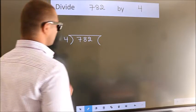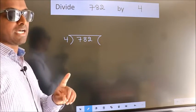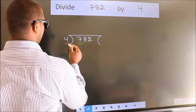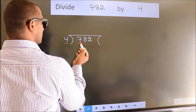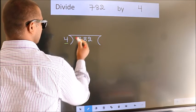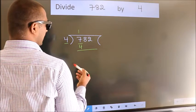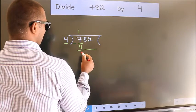This is your step 1. Next, here we have 7, here 4. A number close to 7 in 4 table is 4 once 4. Now, we should subtract. We get 3.